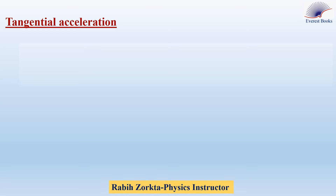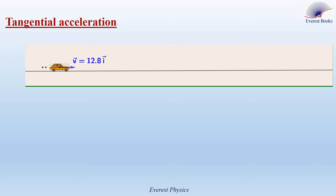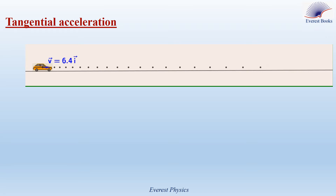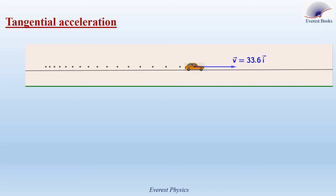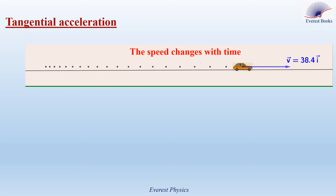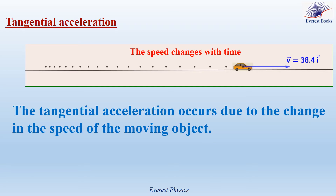In the previous video, we defined that the acceleration vector occurs due to the change in the velocity vector. Now let's study the tangential acceleration. Watch this animation. Consider a car moving on a straight path — the animation is in slow motion. As you see, the speed of the car changes with time. That tangential acceleration occurs due to the change in the speed of the moving object.